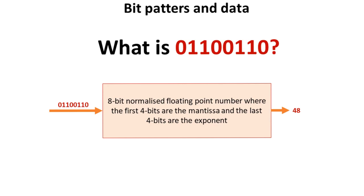Exactly the same signal, translated as an 8-bit normalised floating-point number, where the first 4 bits are the mantissa and the last are the exponent, would now be 48.